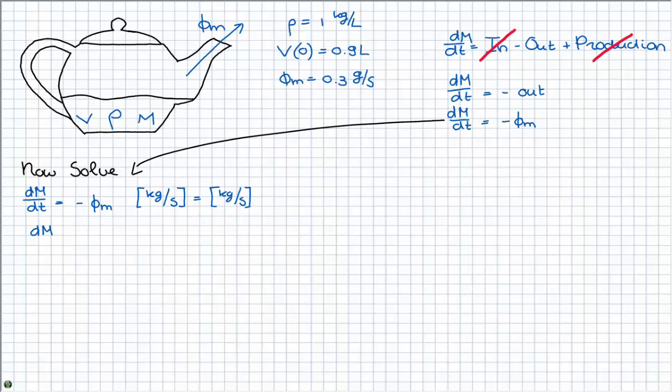Now, to solve this equation I am going to use separation of variables. So I am going to move dt to the right side here, and then integrate.